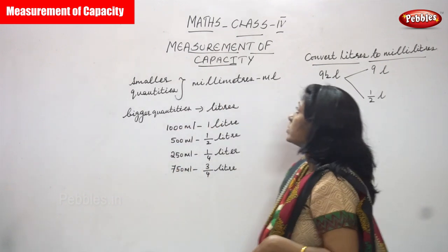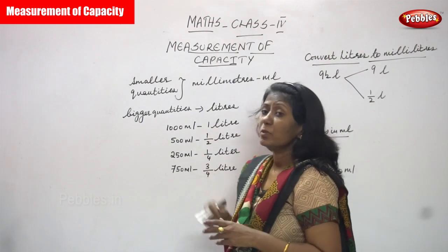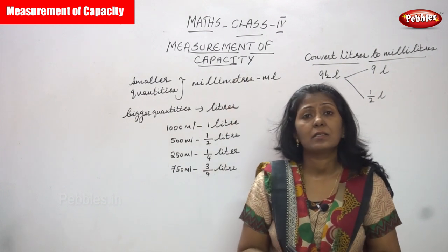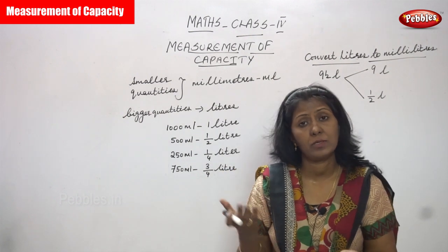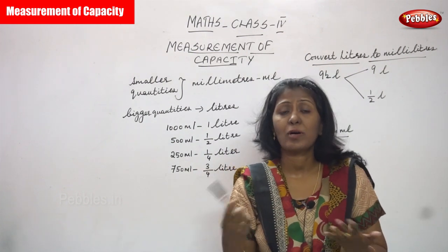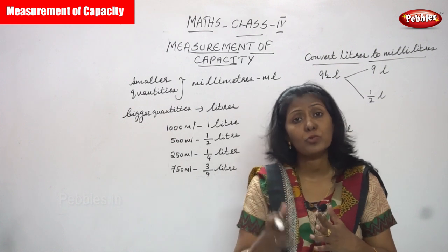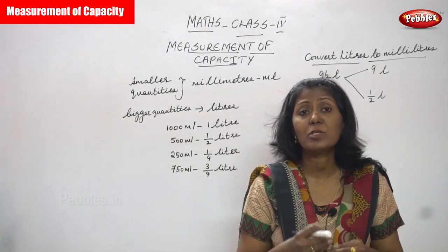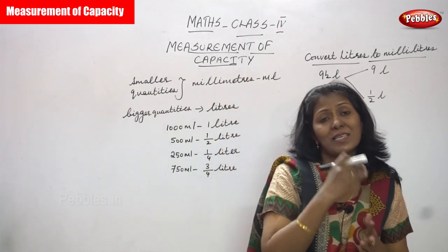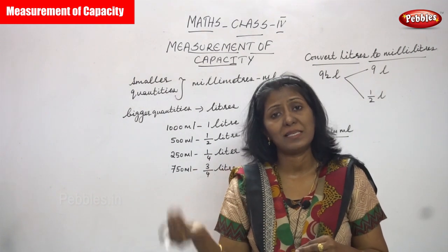Hi, welcome to Pebbles. In today's class we are going to see measurement of capacity. Generally, we measure liquids, and when we talk about liquids we use the word capacity — for example, one liter of water or 500 ml of oil. Liquids are measured in liters or milliliters.